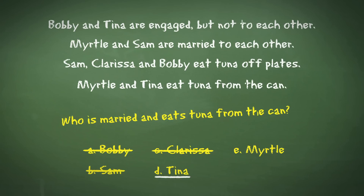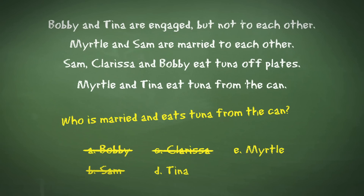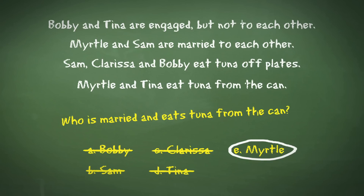We can see that Tina fulfills the second part of the question by eating tuna from the can. However, she doesn't match the part of the question of being married. Finally we come to Myrtle, who is indeed married and also eats tuna from the can. Answer E is therefore the correct answer.